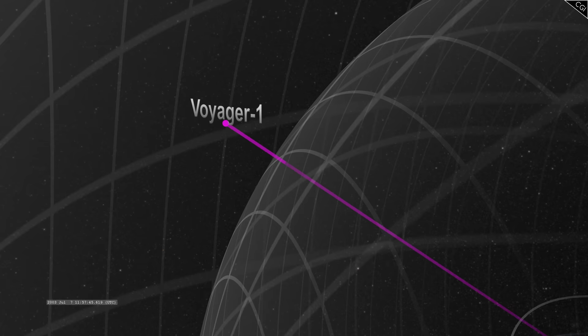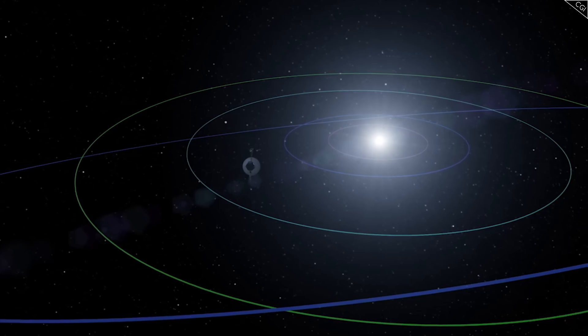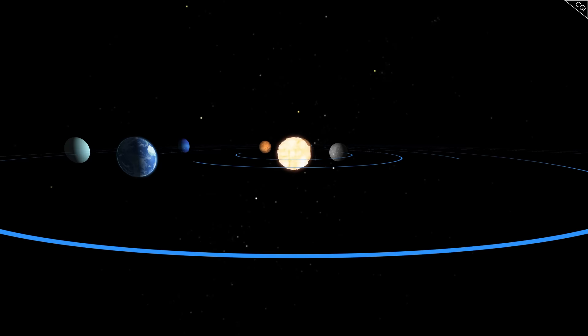The spacecraft Voyager 1 is tasked with exploring the areas beyond our solar system's planets. It's currently 24 billion kilometers out, about 6.5 times further than the distance between the Sun and Pluto.